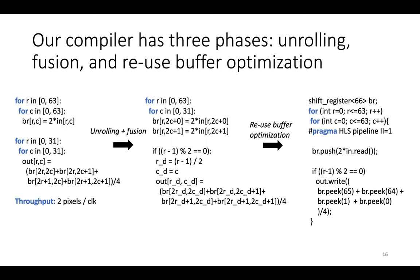Our compiler has three different phases: unrolling, fusion, and reuse buffer optimization. I've compressed unrolling and fusion into a single phase here, so we're going to take in our program and our throughput target. We're going to duplicate statements in the program to reach the throughput target and fuse the two different unrolled loops into a single loop with better locality.